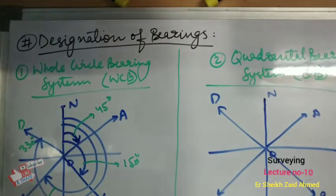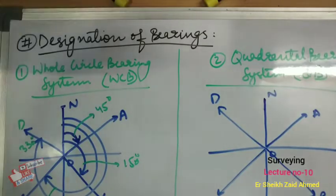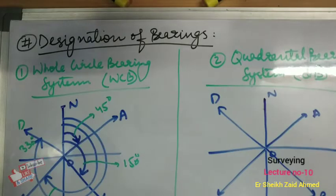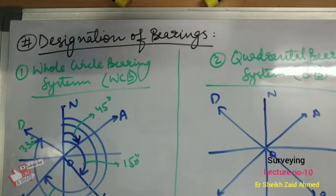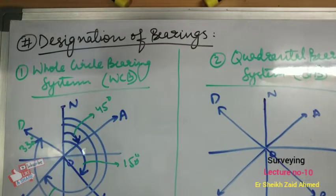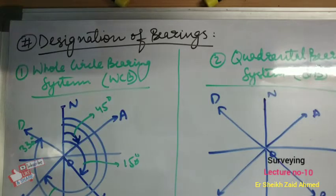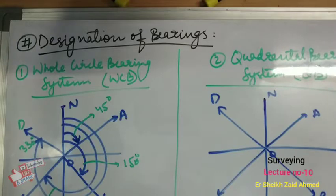In the quadrantal bearing system we make use of the letters N, E, S, W which represent North, East, South and West respectively. For a complete designation of the quadrantal bearing, the quadrant in which the line lies must be mentioned. We first write North or South, then write the angle with respect to North or South, and finally write East or West as the last letter.